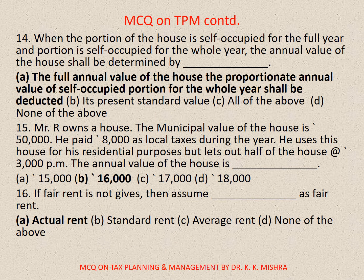Question number 14: When a portion of the house is self-occupied for the full year and another portion is let out for the whole year, the annual value of the house shall be determined by — correct option is A: The proportionate annual value of the self-occupied portion shall be deducted from the full annual value of the house.